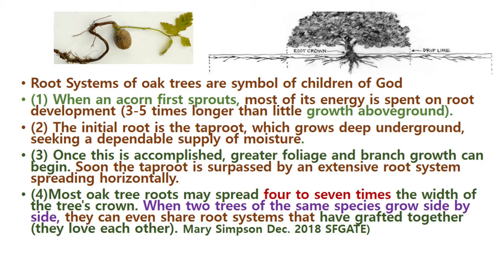A spreading root horizontally is amazing. Number four: most Oak tree roots may spread four to seven times the width of the tree crown. When two trees of the same species grow side by side, they can even share a root system that has grafted together — they love each other. The Oak trees are very good. Usually they are planted under landslide-prone areas. When Oak trees are planted, the vast spreading roots hold the soil firmly, so it prevents landslide.